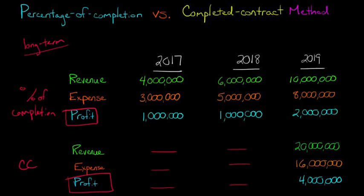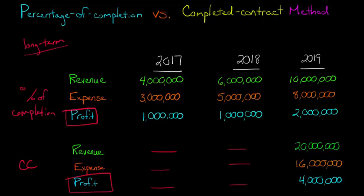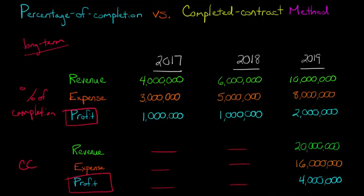Under completed contract, it almost looks like nothing is happening in 2017 and 2018. If this were the only project a firm had, an investor might wonder what's going on — are they doing any business? The reality is they've been doing business all along, but they recognize that profit all the way at the end of the contract. So it's not as smooth with completed contract as with percentage of completion. It's a little easier to account for, but earnings all just get dumped at the end when you finish the contract.